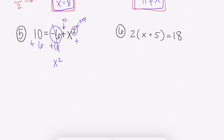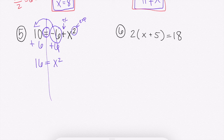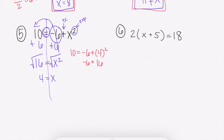We add 6 to both sides to get x squared equals 16. With the squared, you can think: what times itself gets me 16? You probably know that's 4. Otherwise, the opposite operation for squared is square root: square root of 16 is 4. Checking: 4 squared is 16, plus negative 6, which is 16 minus 6, equals 10. That works.